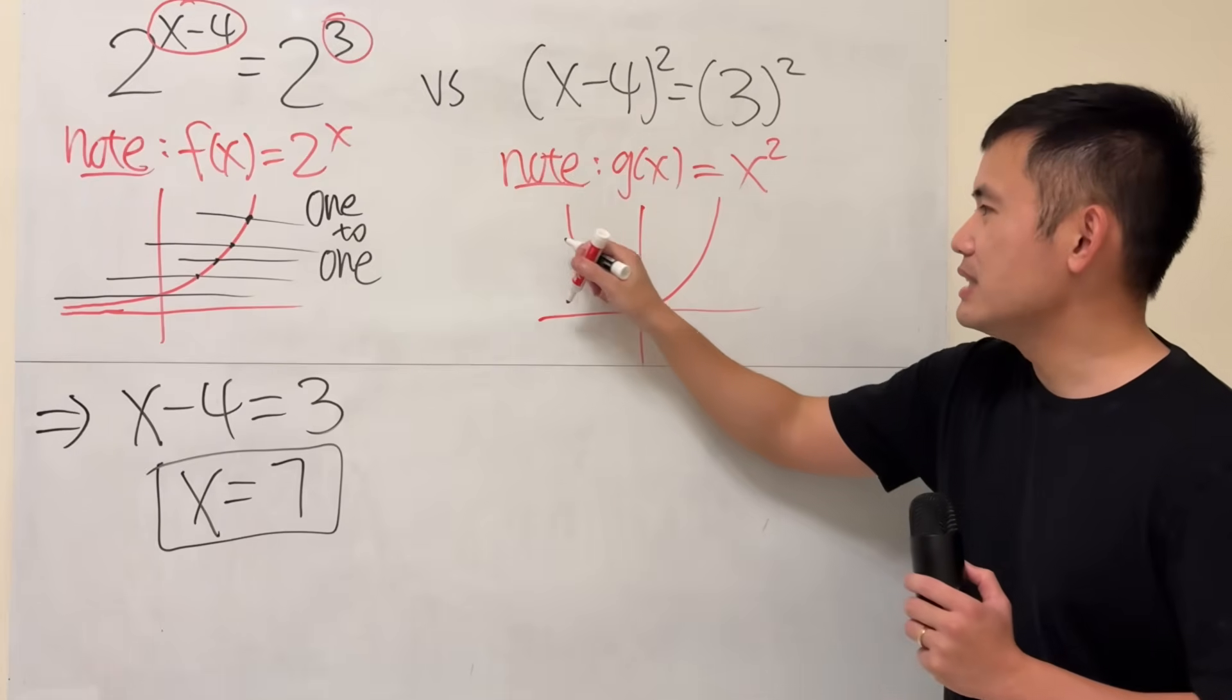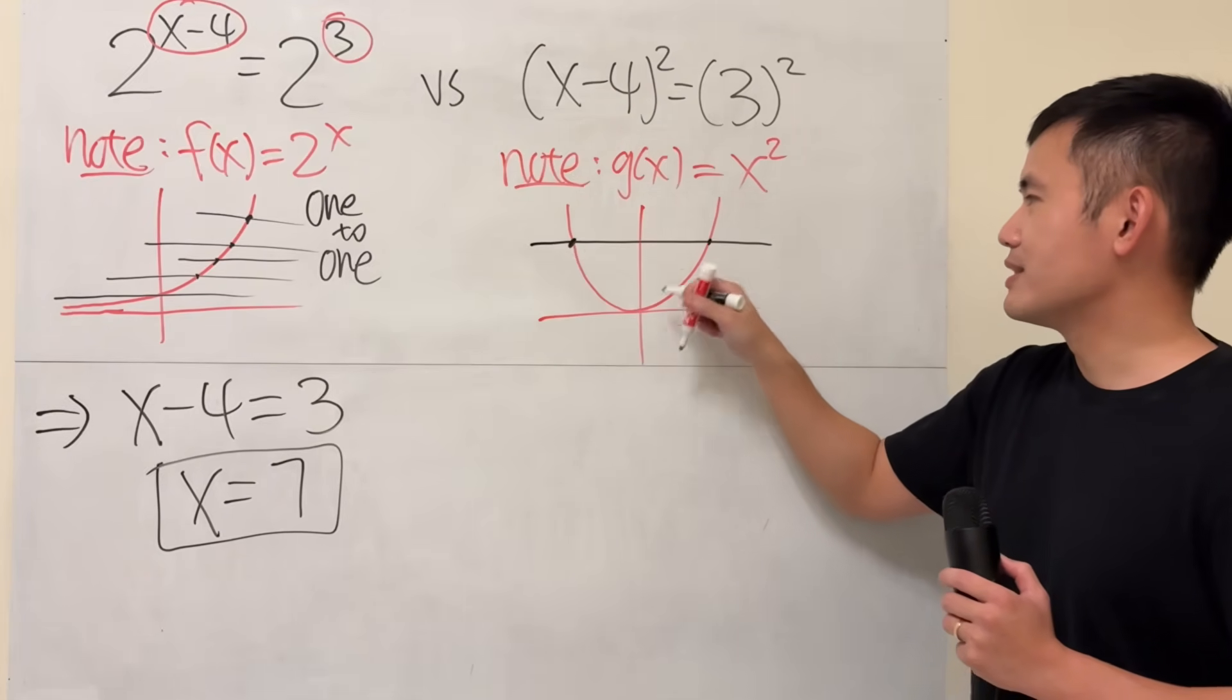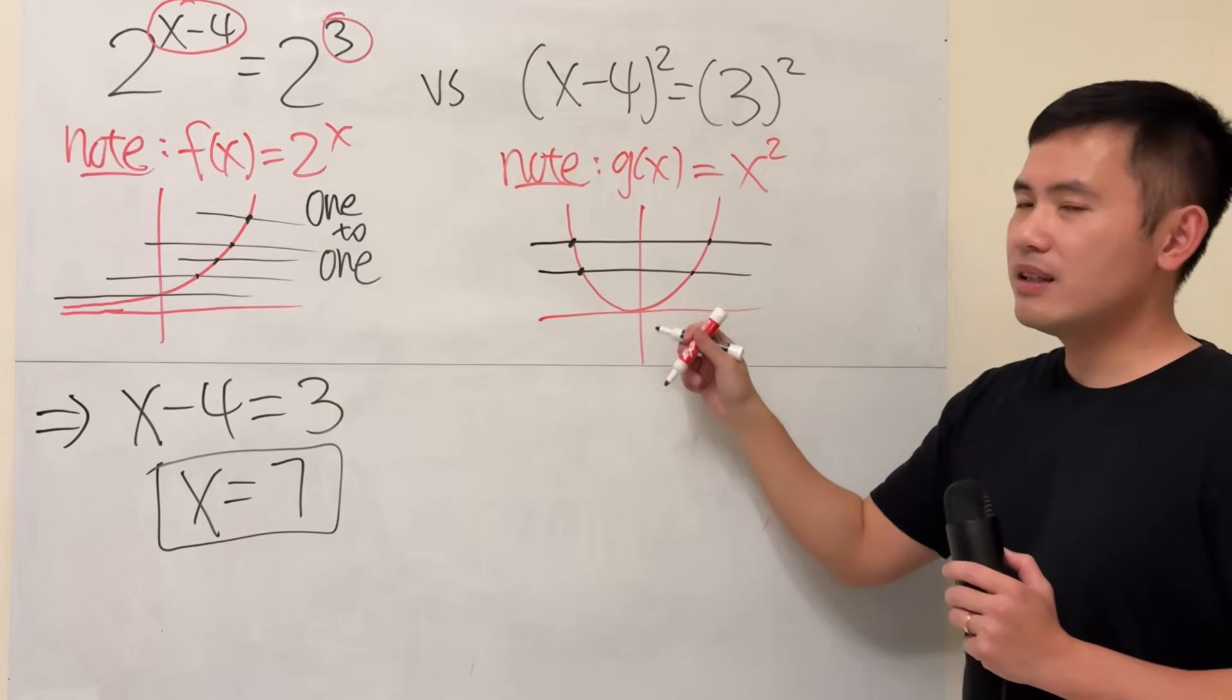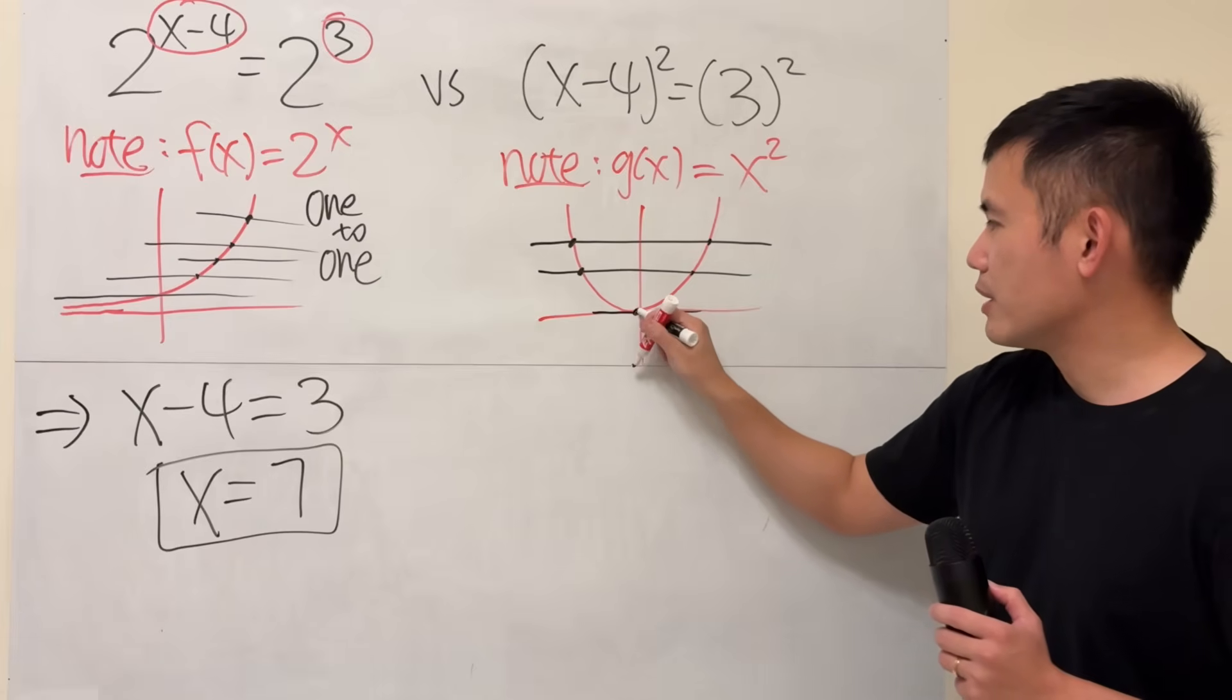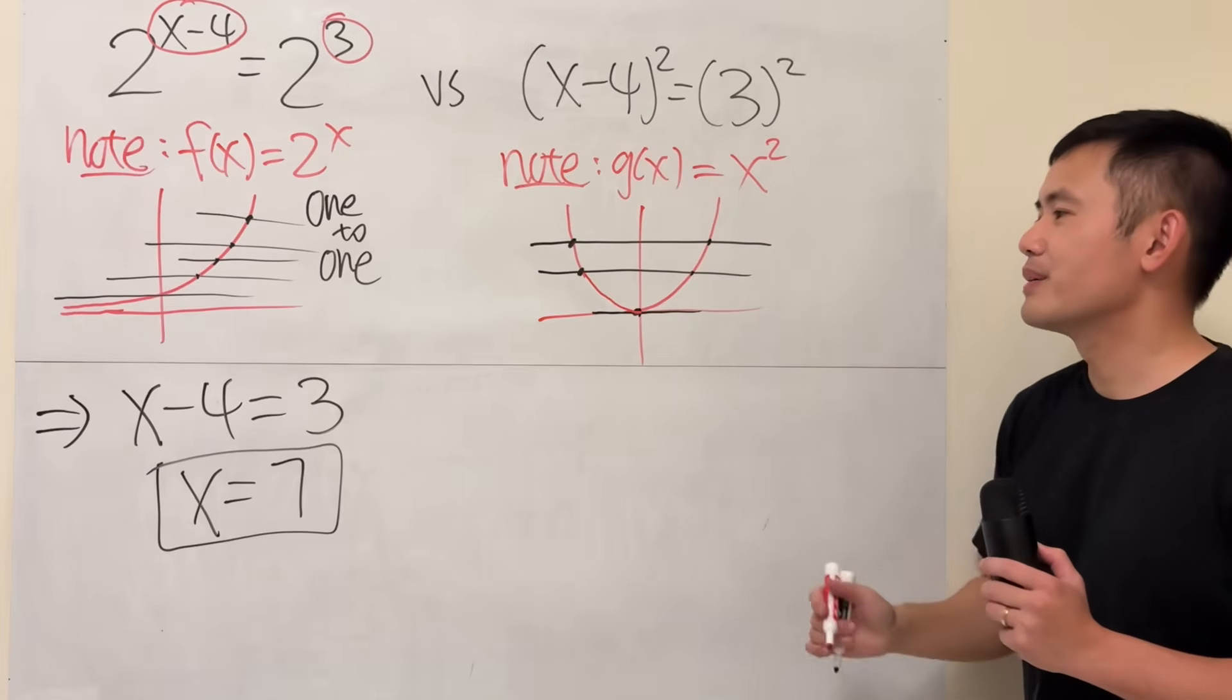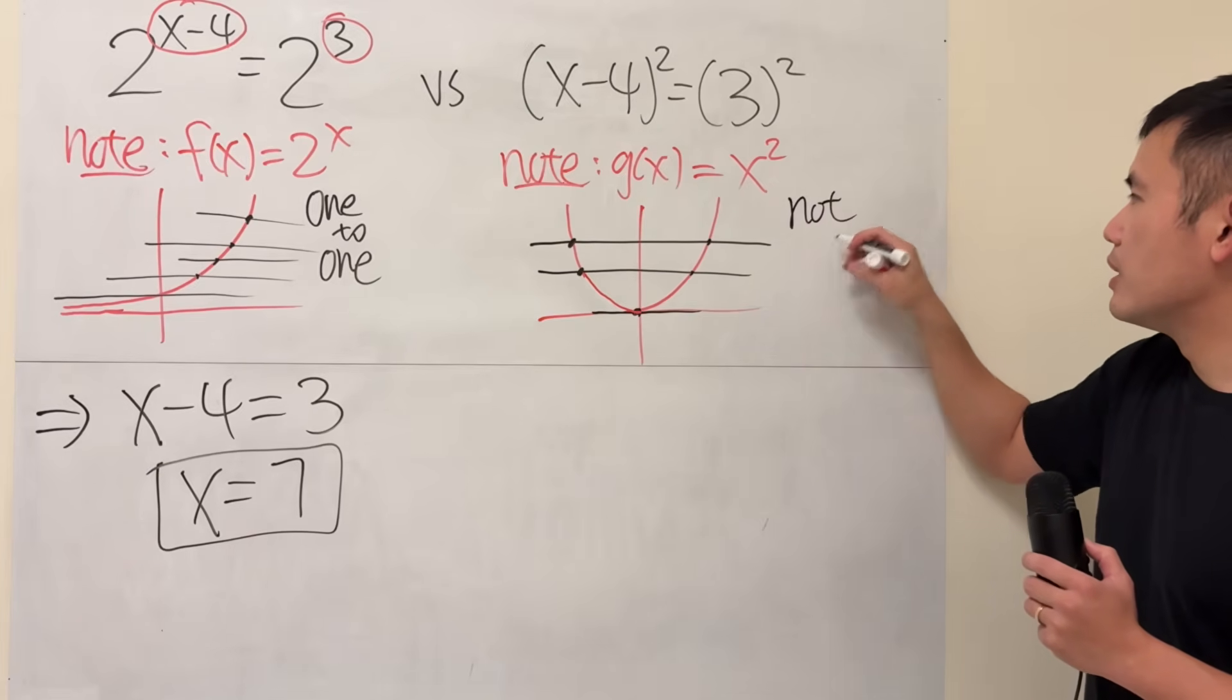No. Because if you draw a horizontal line, you can see that this line touches the curve here and here at two places. Likewise, if you draw another one, it also touches two places. The only time that it touches the curve at one place is when you have the zero here. I know it's not so perfect, but I just fixed it. So, technically, this right here is not one-to-one.